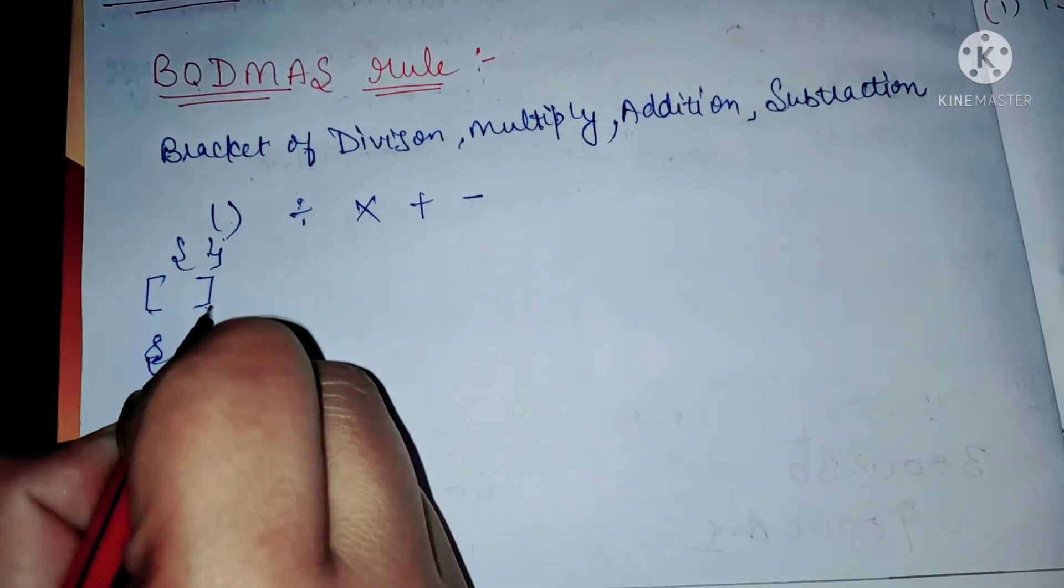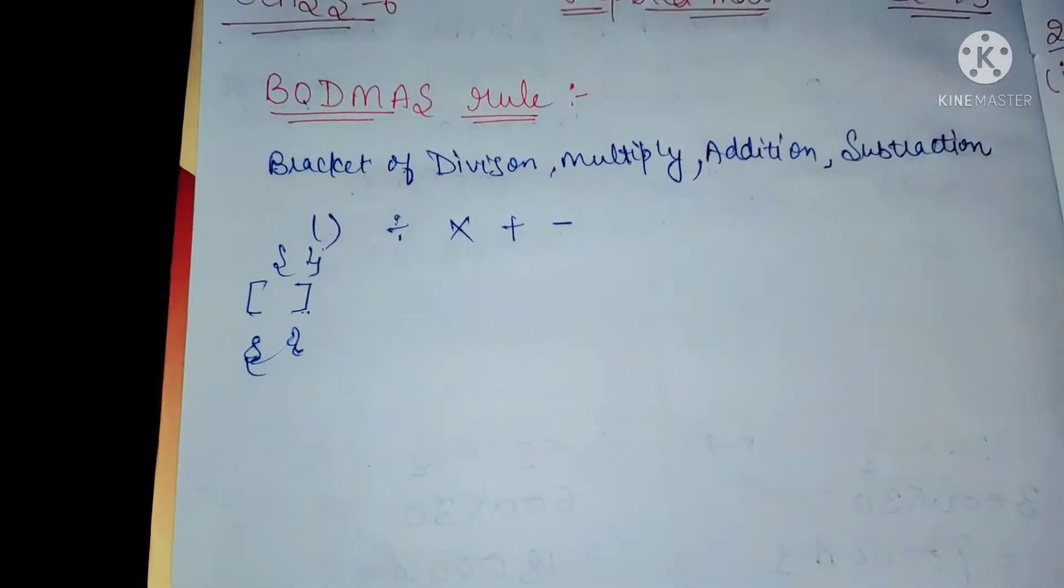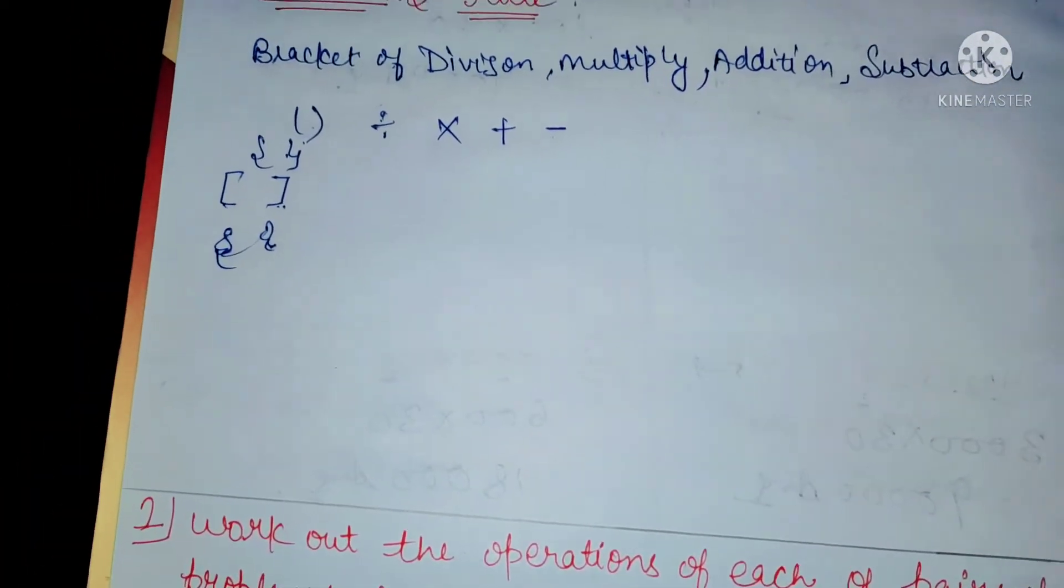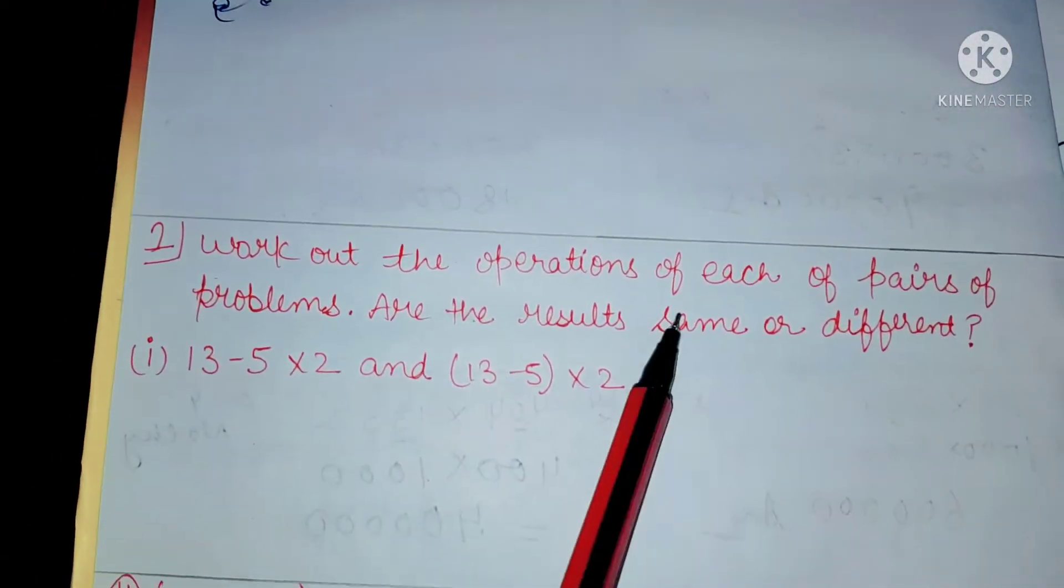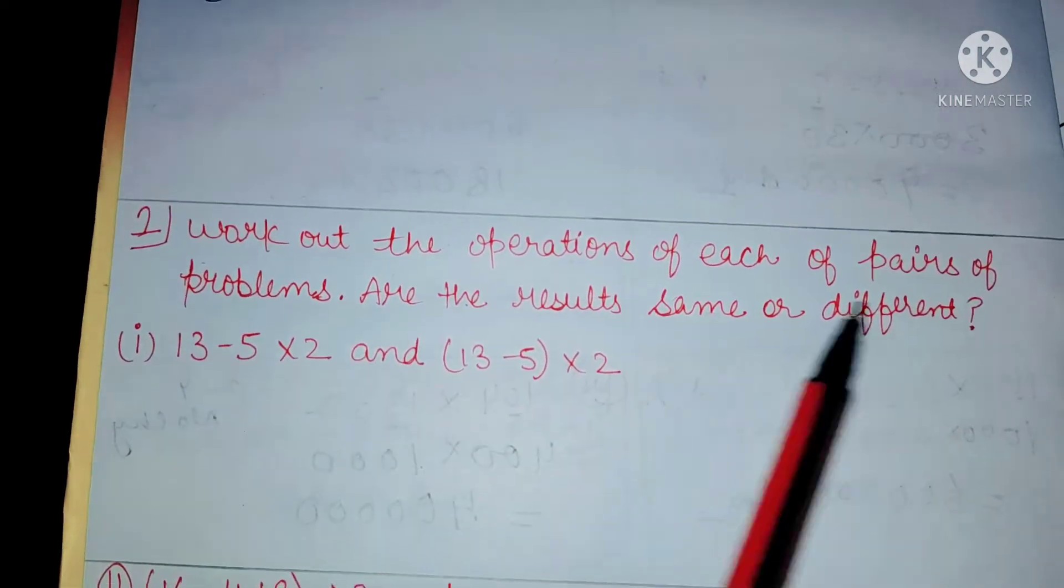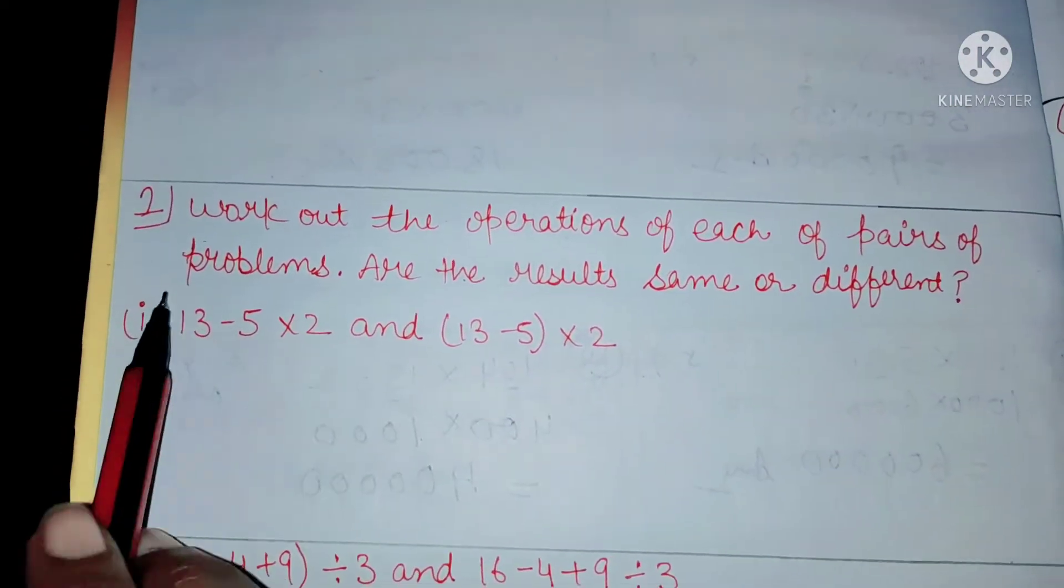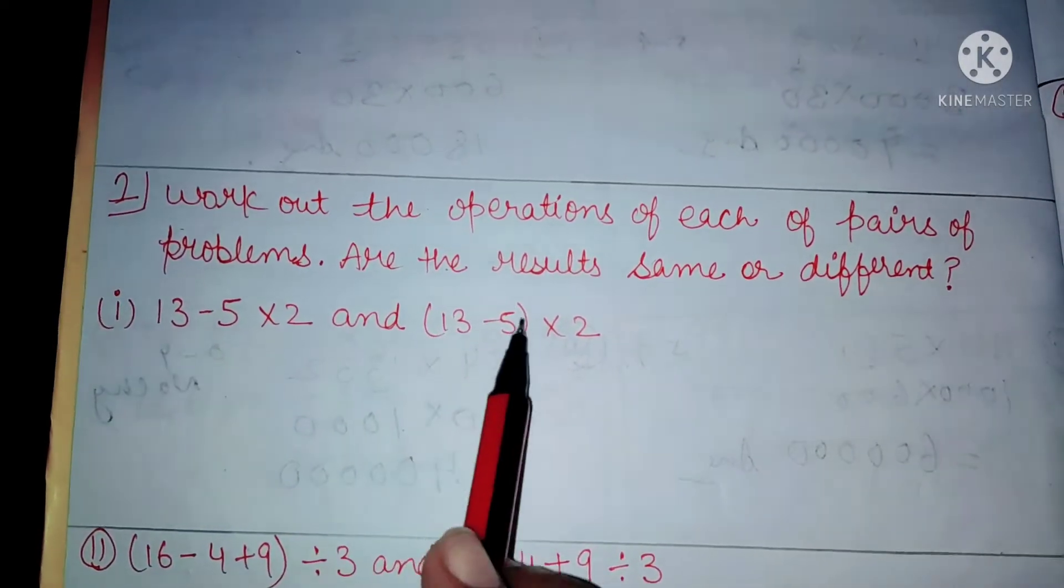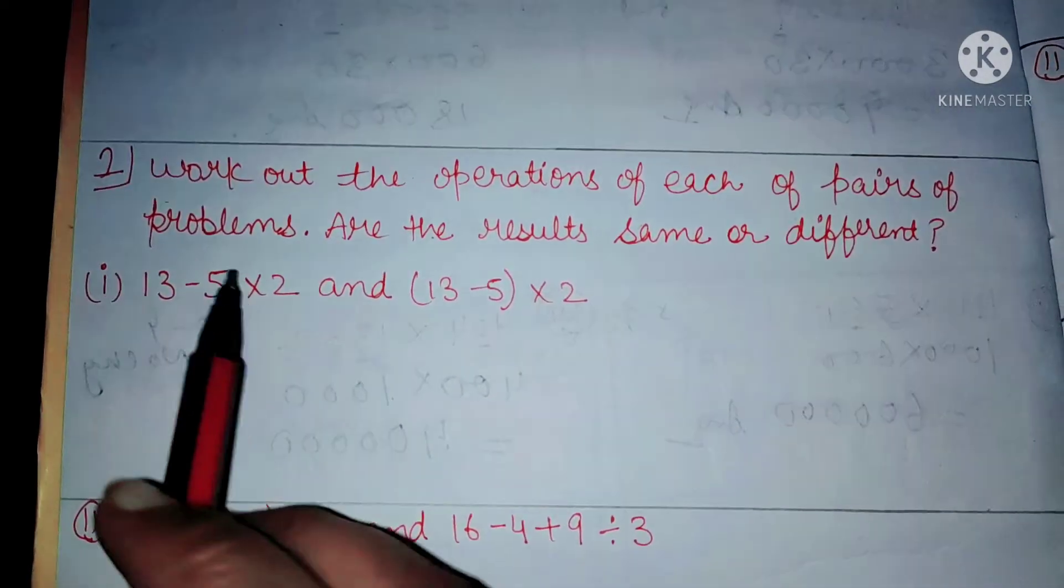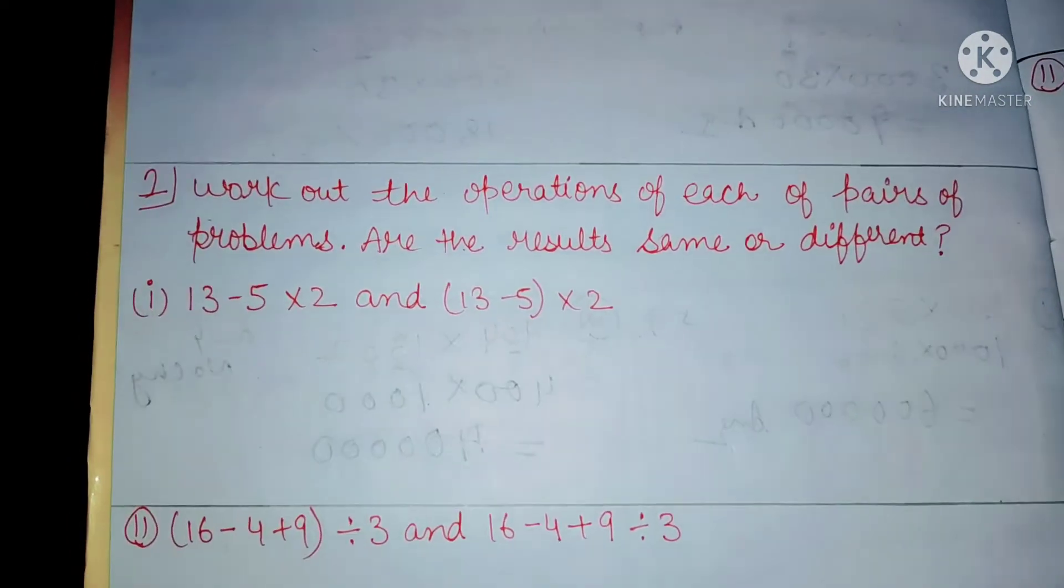Now let's do question number one. Work out the operations of each pair of problems. Are the results same or different? Here we have only operations given. We have minus and multiply. According to this, we have to tell if the answer is the same or different.